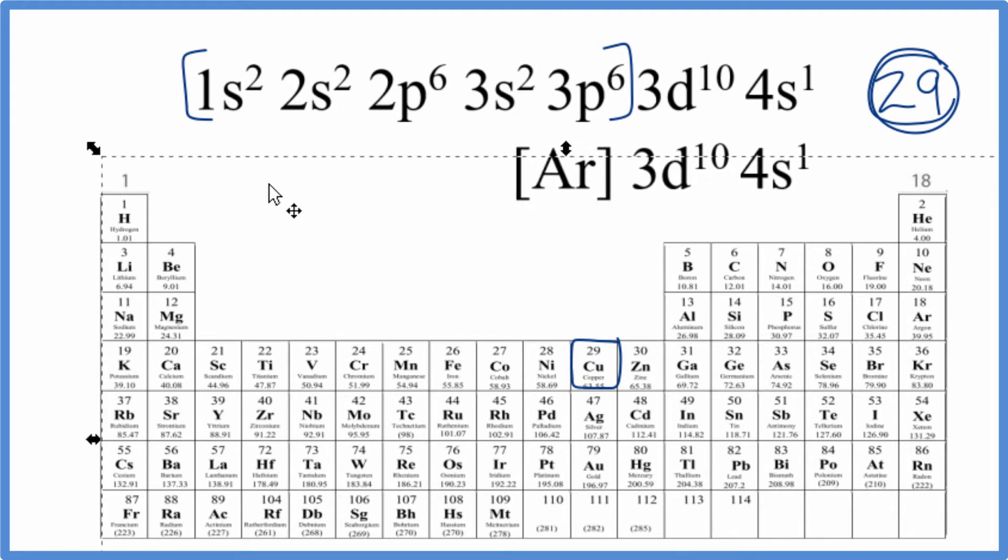And that would look like this. So this is our condensed notation. Do note that often you'll see the 4s before the 3d, just something to be aware of. You should also note that copper is an exception in terms of electron configurations. We normally would have 4s² 3d⁹. Copper, that's a little bit different. There's a link in the description to help you understand why that is. And this is one of the common exceptions that you'll see on exams.